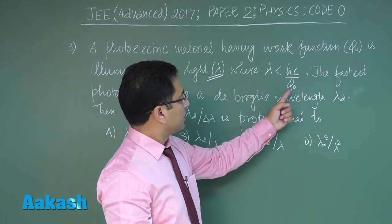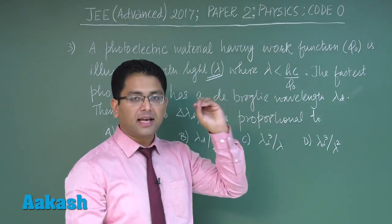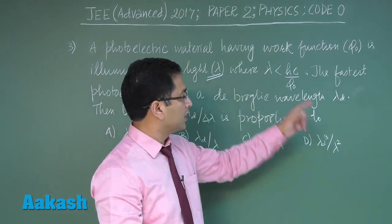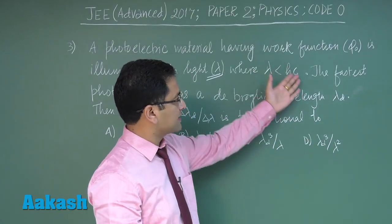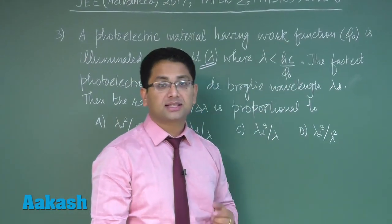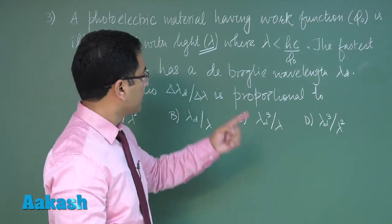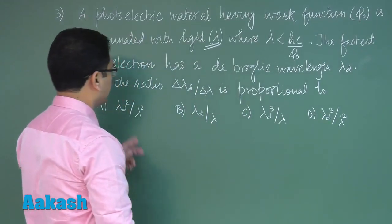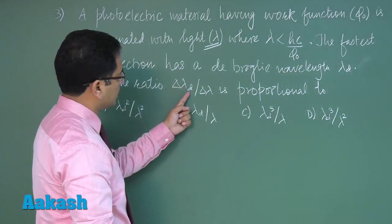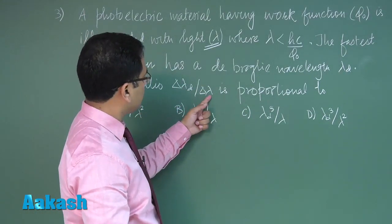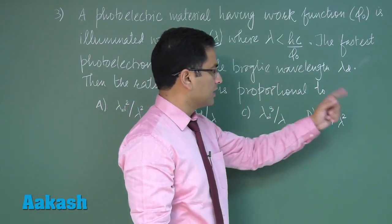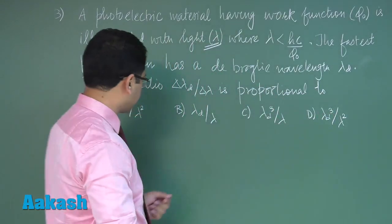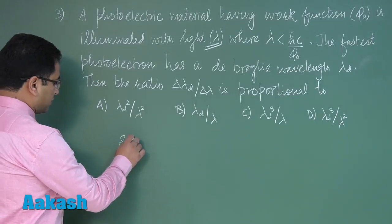This clearly indicates that emission will happen because the work function is less than hc by lambda, which is the energy of the photon. The fastest photoelectron has a de Broglie wavelength lambda d. Then the ratio of change in de Broglie wavelength to change in light wavelength is proportional to - let's see, it's a very straightforward question.